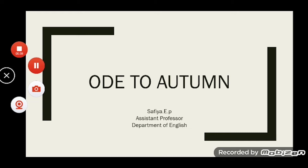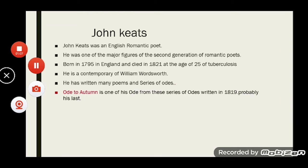'Ode to Autumn' was one of the famous odes written by John Keats. It was composed on 19 September 1819, and the publication date of 'Ode to Autumn' is 1820. John Keats is an English Romantic and nature poet. He was born in 1795 in England and died in 1821 at the age of 25 of tuberculosis.